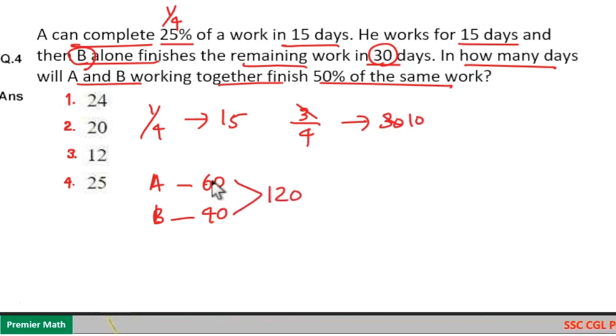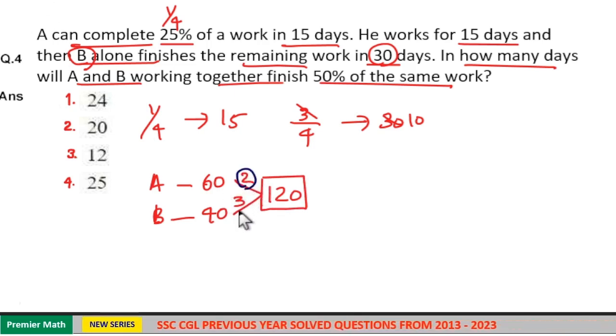Now take the LCM. LCM is equal to 120. 60 goes 2 times in 120, 40 goes 3 times in 120. Total work is 120 units and A can finish 2 units of work in a day. B can finish 3 units of work in a day.